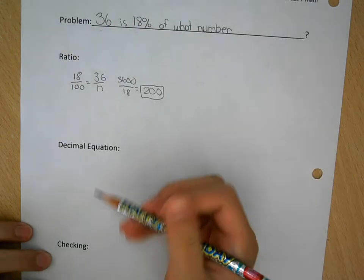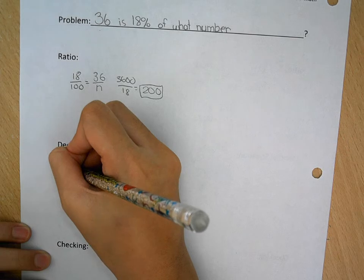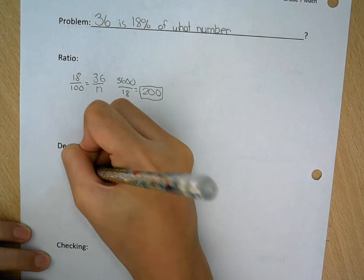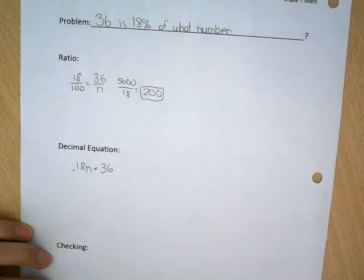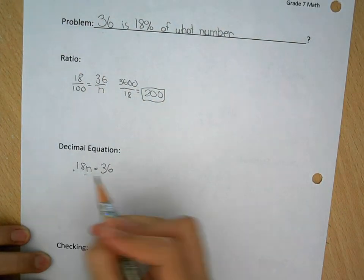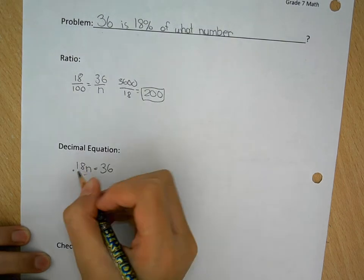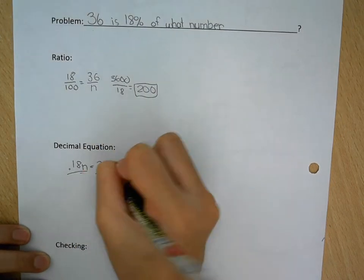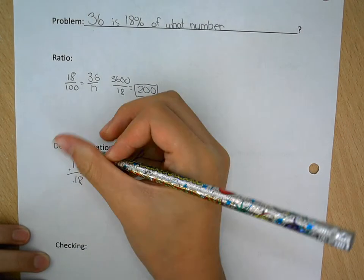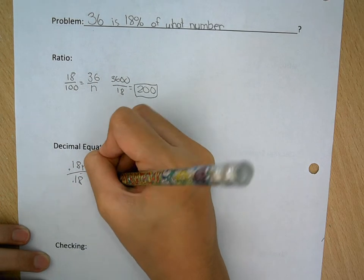The decimal equation, so 0.18 N equals 36. So this decimal, we need to kind of equal it up. So divide this by 0.18 and 0.18.